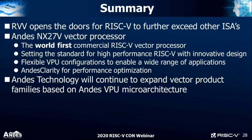In summary, RISC-V vectors opens the door for RISC-V to further exceed any other ISAs on the market. The NX27B vector processor — the first implementation of RISC-V vectors — is the world's first commercial processor available today. It sets standards for high performance RISC-V with innovative design, a flexible vector processing unit configuration to enable a wide range of applications. Tune the hardware to your application. We have AndesClarity to really optimize the performance and software. Andes Technology will continue to expand vector products and CPU product families based on the Andes VPU microarchitecture.